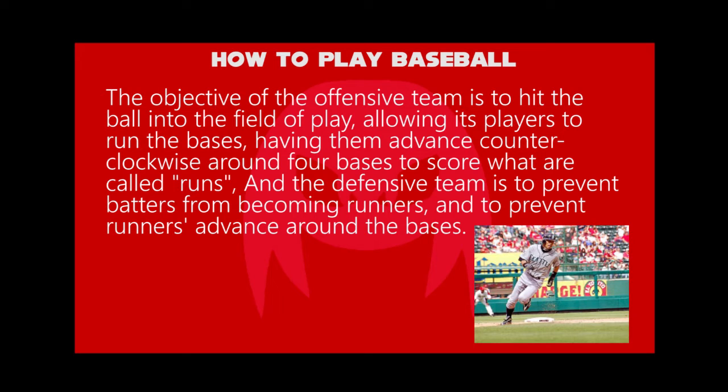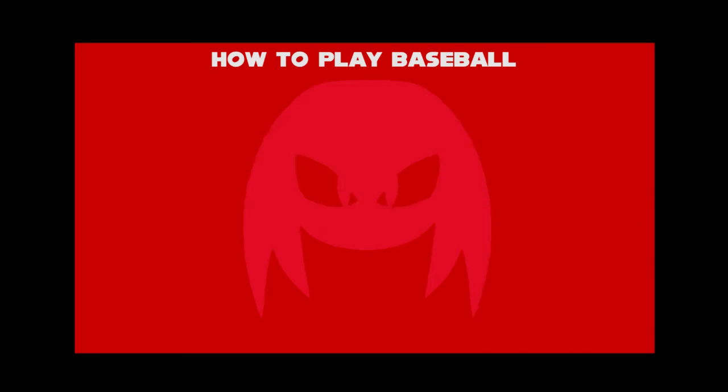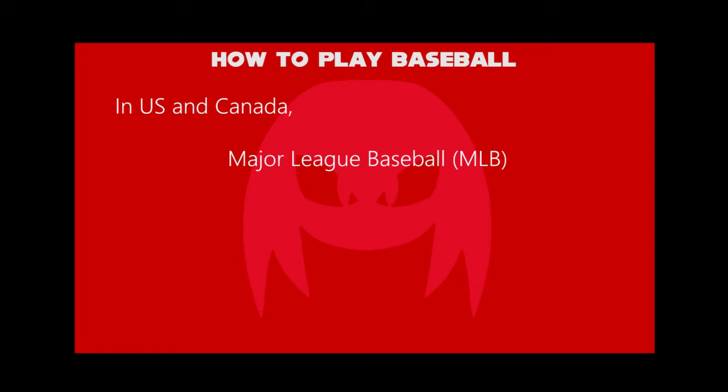allowing its players to run the bases, having them advance counterclockwise around four bases to score what are called runs, and the defensive team is to prevent batters from becoming runners, and to prevent runners from advancing around the bases. In the United States and Canada, professional major league baseball